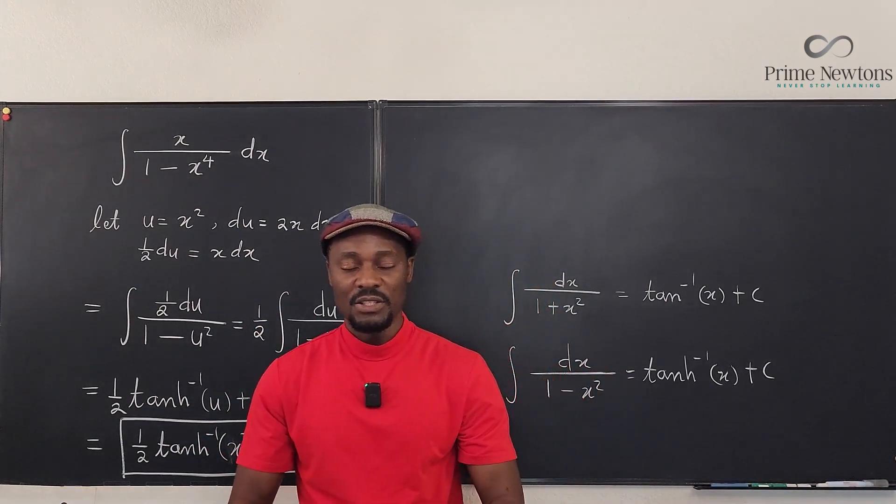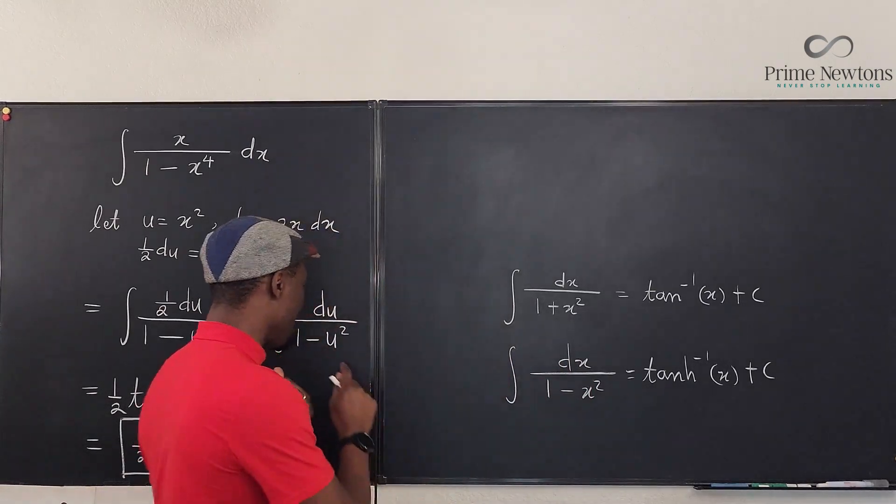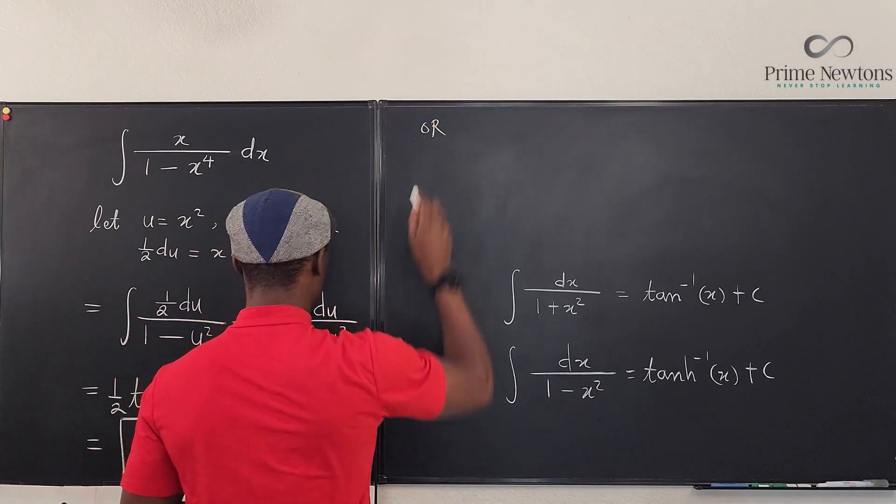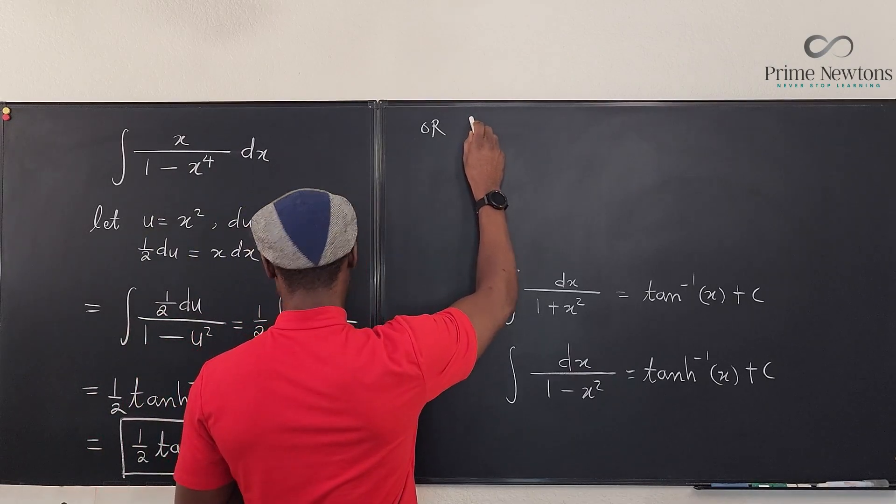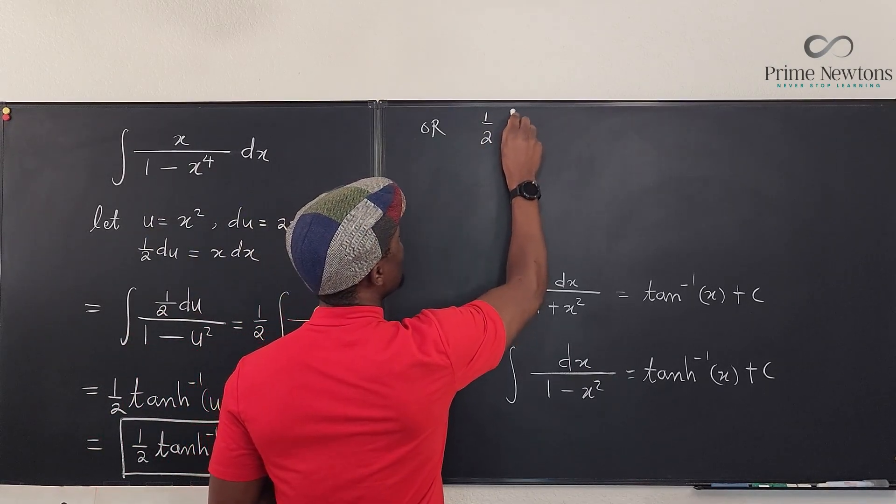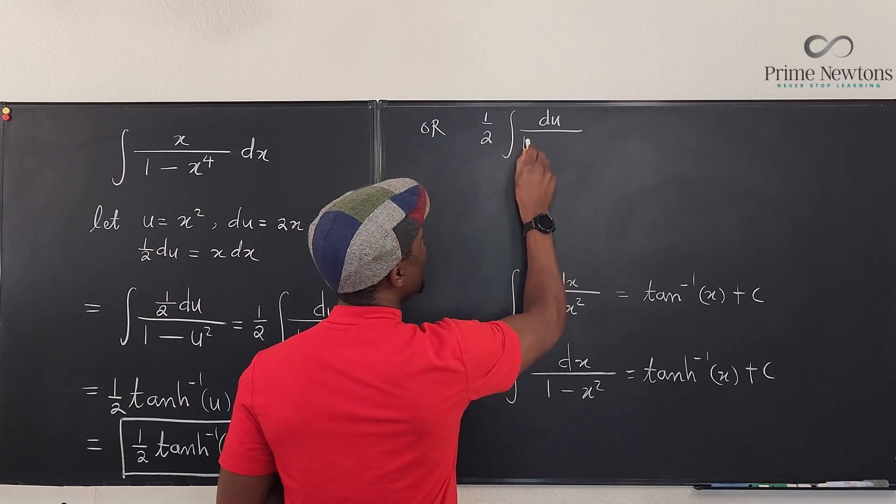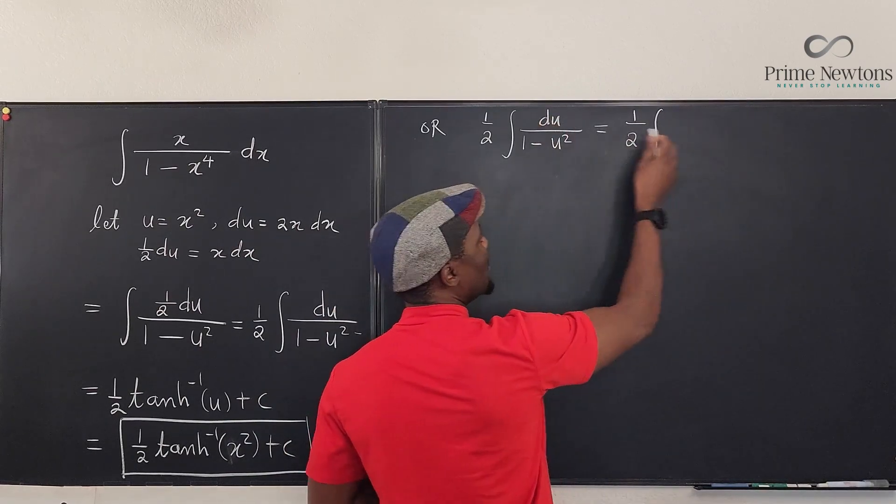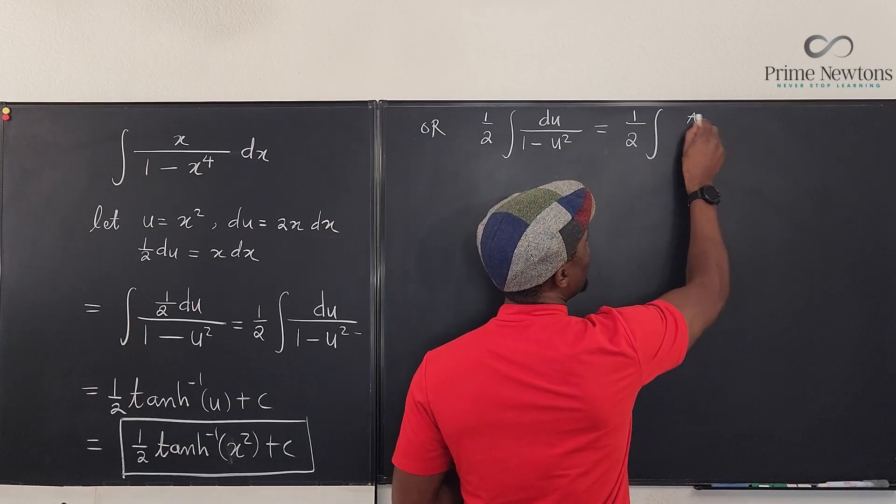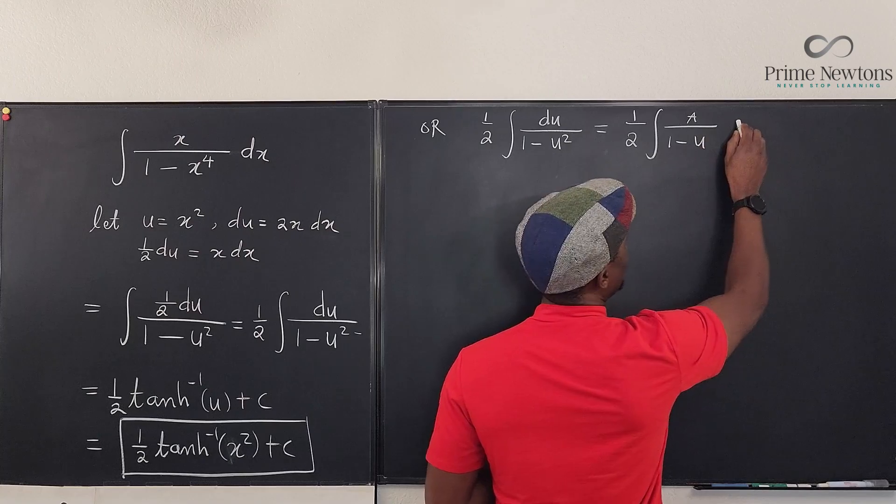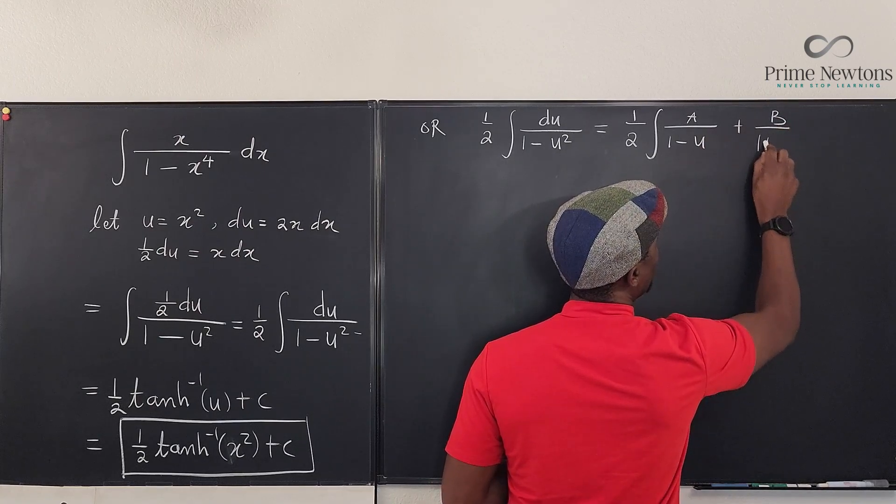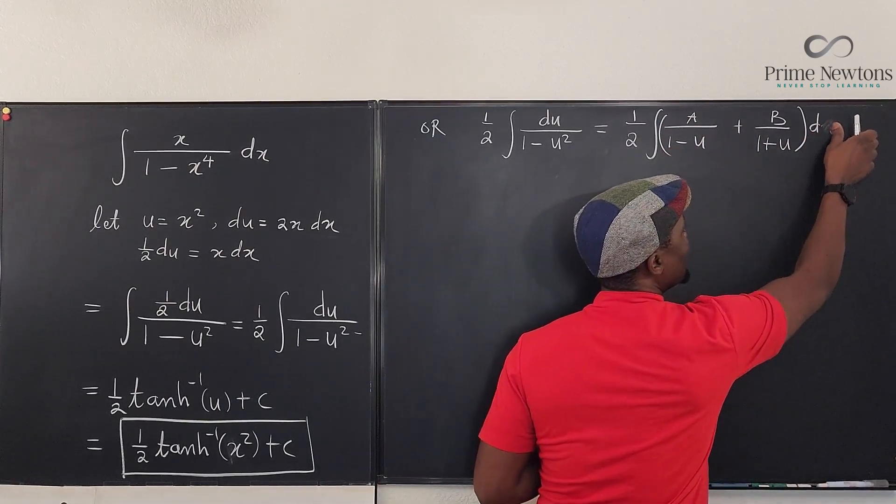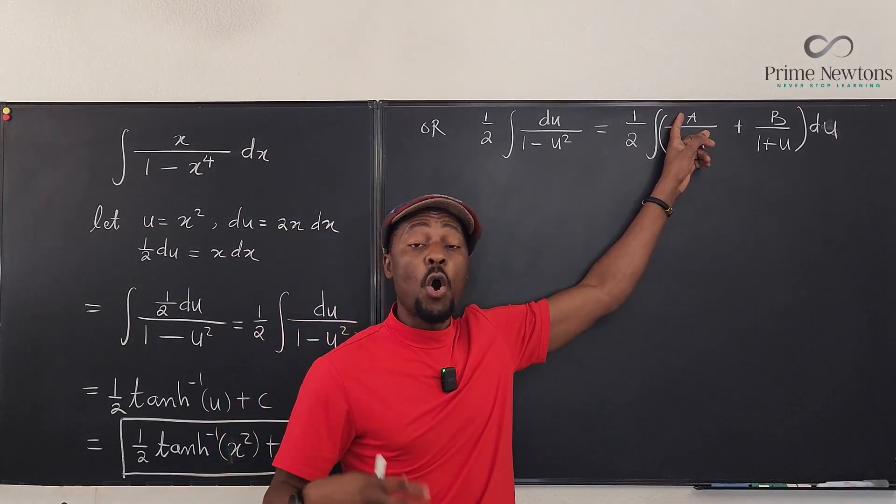And you have to treat this as the difference of two squares so that you can say from here: ½ integral of du over 1 - u². This is ½ times the integral of A over 1 - u plus B over 1 + u, and you take the integral with respect to u. Now what would A be? A will always be ½ and B will always be ½ in this case.